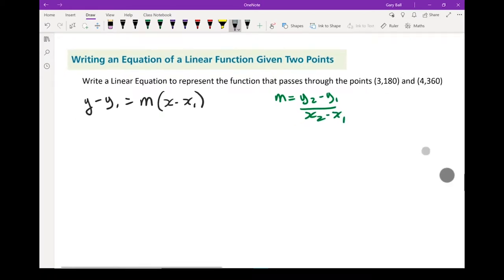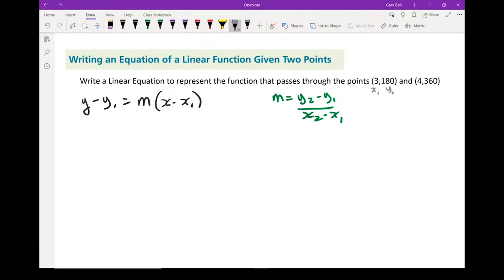m equals y2 minus y1 over x2 minus x1. This is a skill we've done before. Let's label those points. This is going to be x1 and that's y1. That's x2 and y2. Let's put them into our formula.